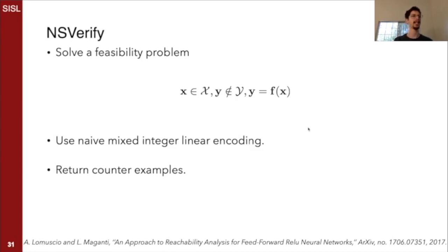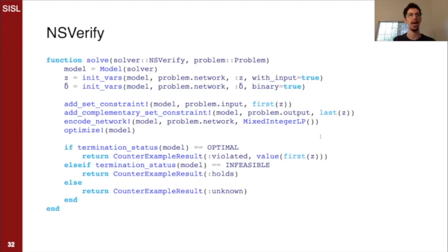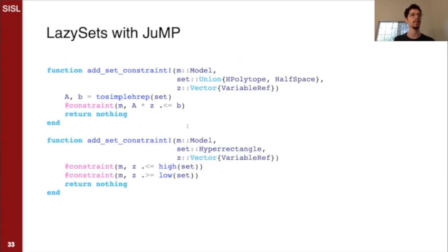Another quick case study here is we'll look at NS-verifying, which is sound and complete, and also intractable in most cases, as sound and complete methods tend to be. Not always. And it defines the, it's a feasibility problem, it defines the constraints x in X, y not in Y, and y equals f(x), in search of counterexamples. It uses a mixed integer linear program. We won't go through the code. The one thing I do want to mention is that we use lazy sets in conjunction with JuMP for the optimization methods. And so for example here, this function add_set_constraint internally looks like this. And this is taken straight out of the library, it's exactly what it looks like.